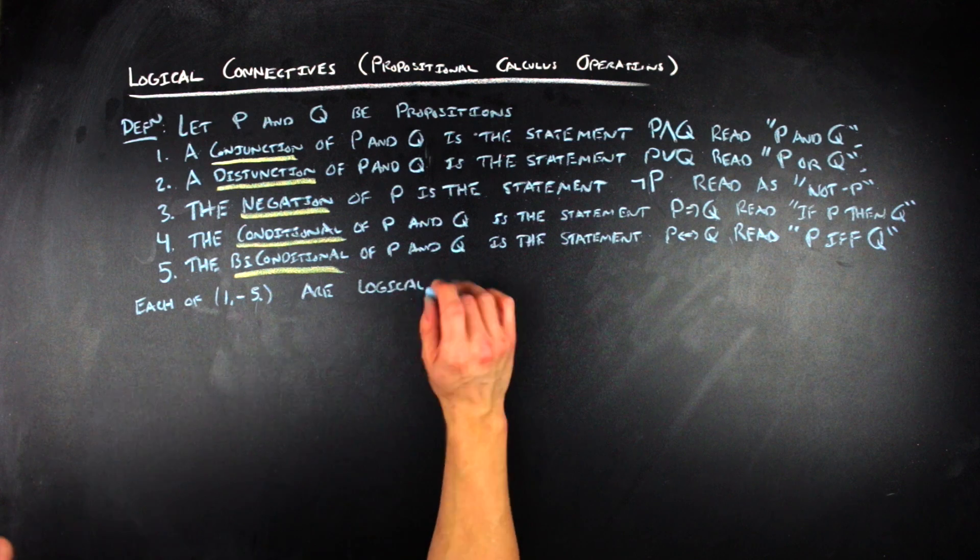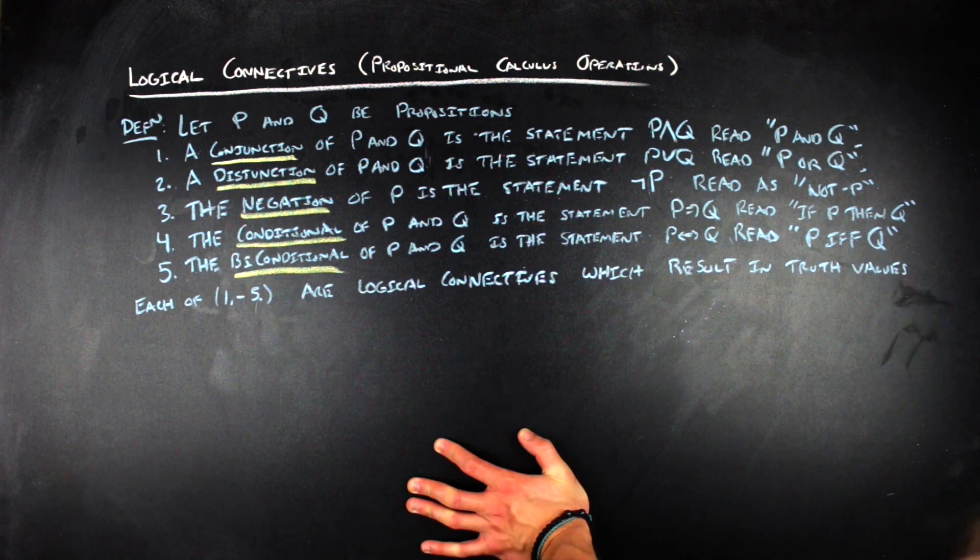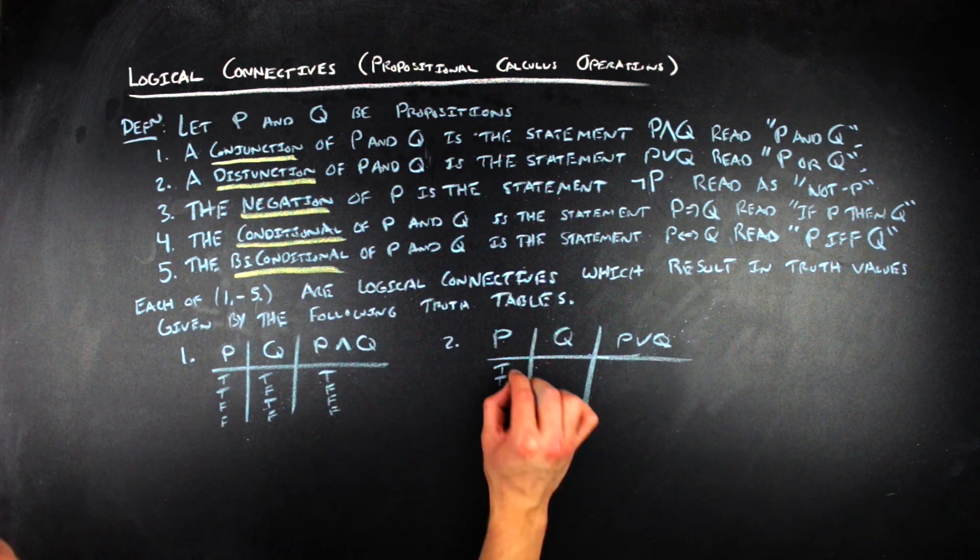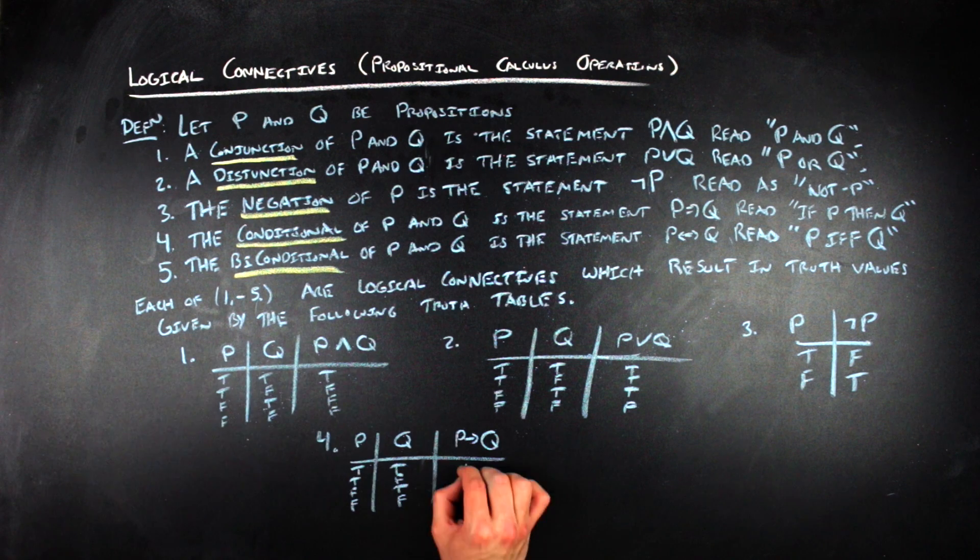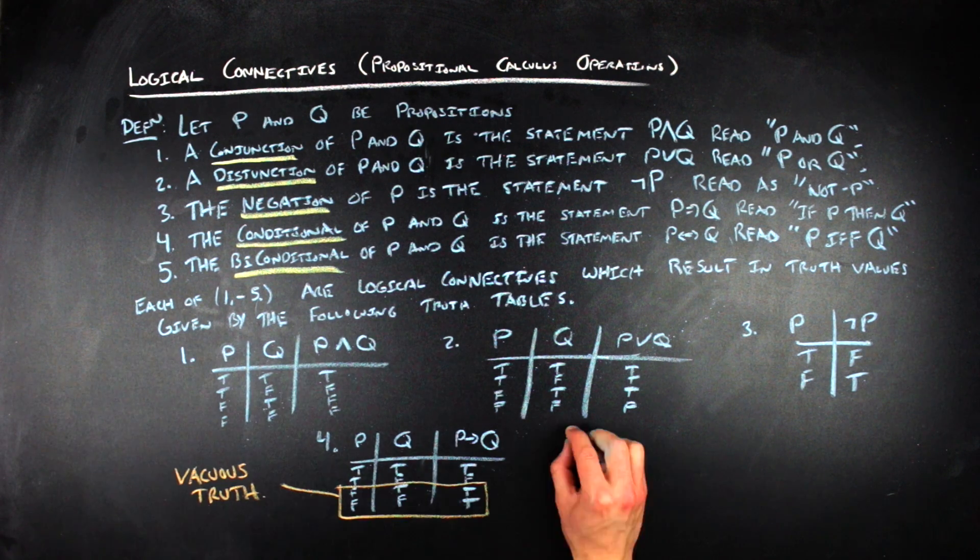So each of these logical connectives take in the truth values of the given propositions that you're working with and spit out a true or false depending on what you started with. And when we're evaluating truth of more complicated statements based on the truth of other propositions, we use truth tables, at least in the beginning. So for the five operations that are defined above linguistically, there are these five truth tables that I've created on the board down below.